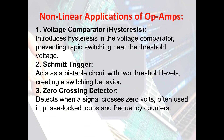For the non-linear applications of op-amps, we have the voltage comparator with hysteresis, which introduces hysteresis in the voltage comparator, preventing rapid switching near the threshold voltage. We set a threshold voltage and the signal should not go beyond it. The Schmitt trigger acts as a bistable circuit with two threshold levels, creating a switching behavior — it also functions as a buffer circuit. The zero-crossing detector detects when a signal crosses zero volts, often used in phase-locked loops (PLL) and frequency counters.